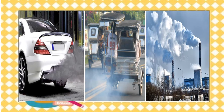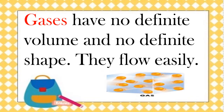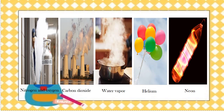You have learned that air is a gas. Smoke from cars, tricycles, and factories are examples of gas too. Gases have no definite volume and no definite shape. They flow easily. Do you know that air is composed of many gases such as nitrogen and oxygen? It also contains carbon dioxide, water vapor, helium, neon, and other gases. Air is generally colorless, tasteless, and odorless.